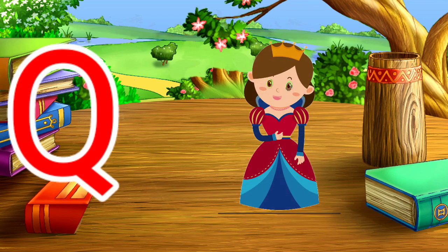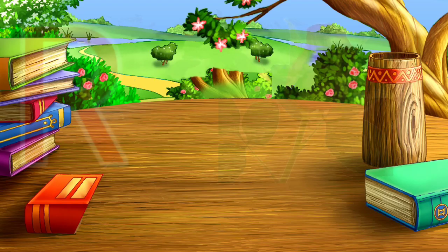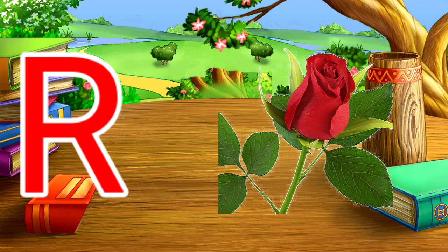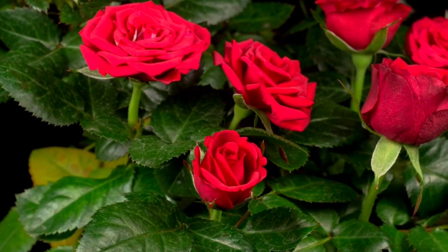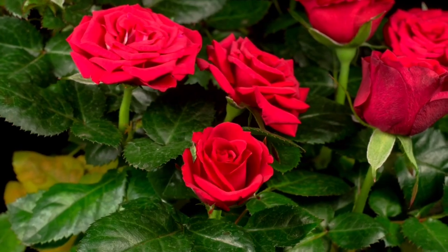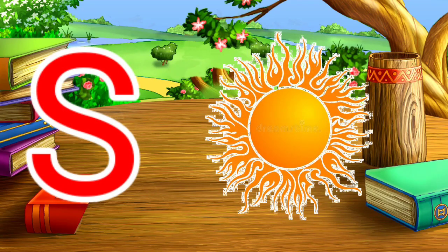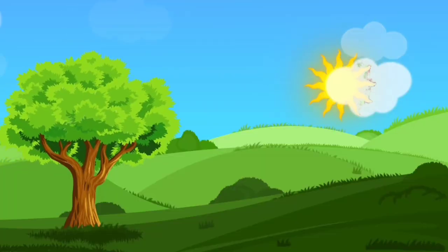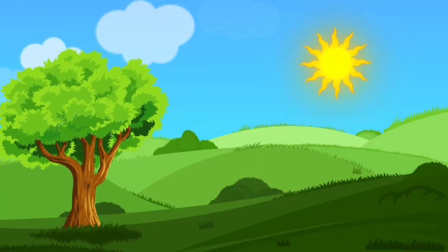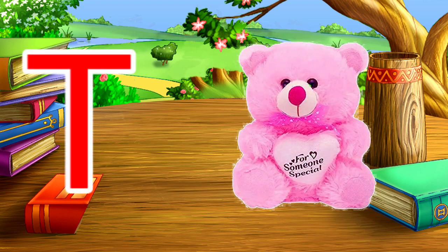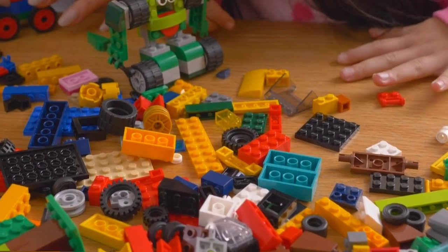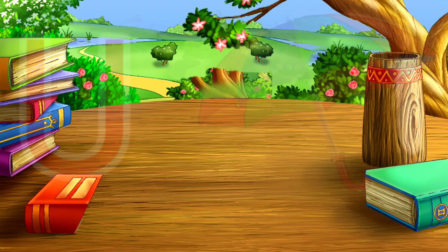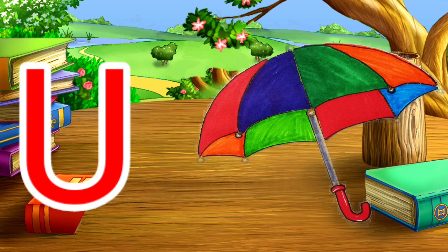Q for queen. R for rose. S for sun. E for toy, T for toy. U for umbrella.